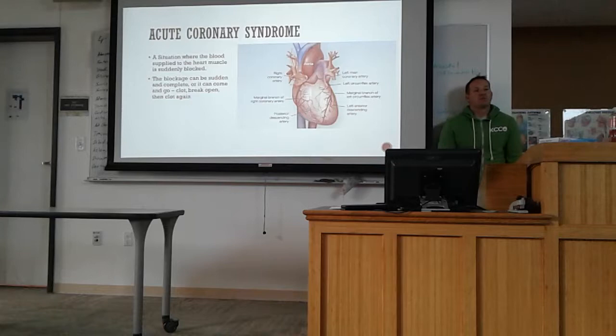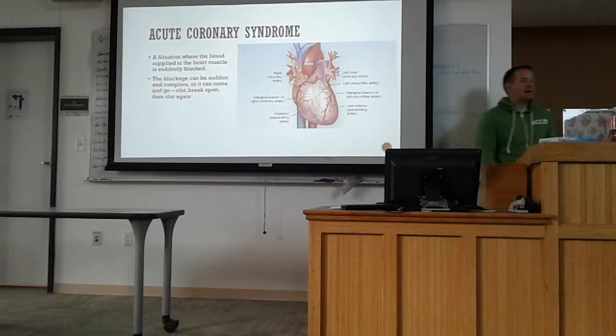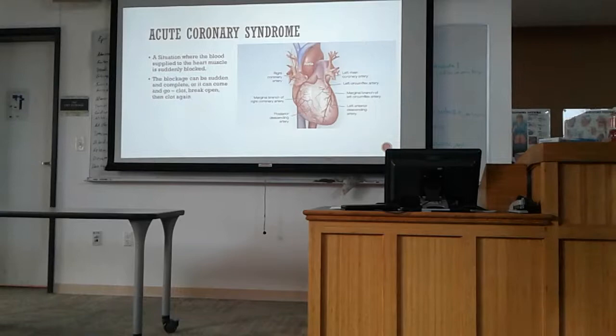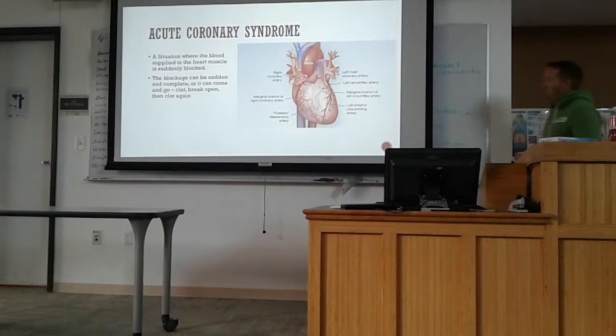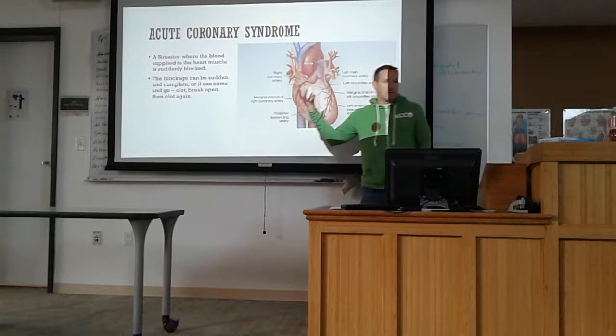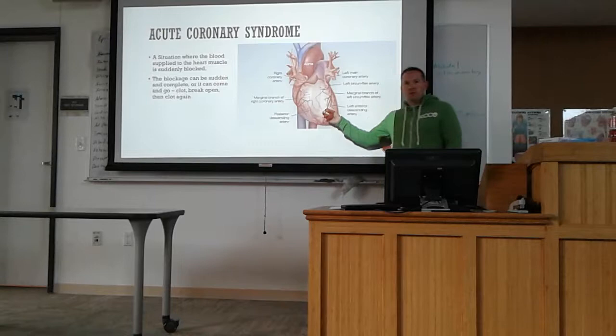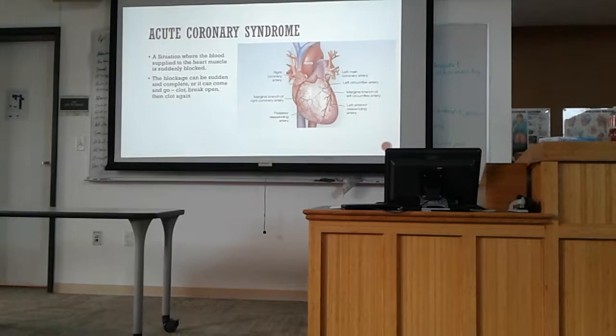So this Acute Coronary Syndrome is usually a complete blockage. These are the ones that people end up having coronary artery bypass grafts — your cabbages, your open heart surgeries. You have your coronary arteries that basically provide blood and oxygen to the heart muscle. When one of these gets blocked, it's an acute onset, happens instantaneously. So what kind of things cause this blockage?